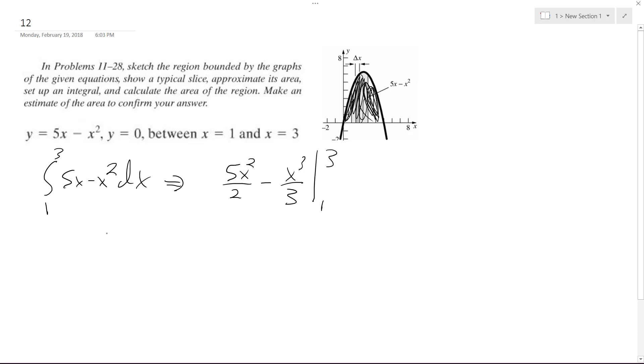So we get 5 times 9 over 2 minus 3 cubed, which is 27 over 3, which is 9, minus 5 halves minus 1 third.